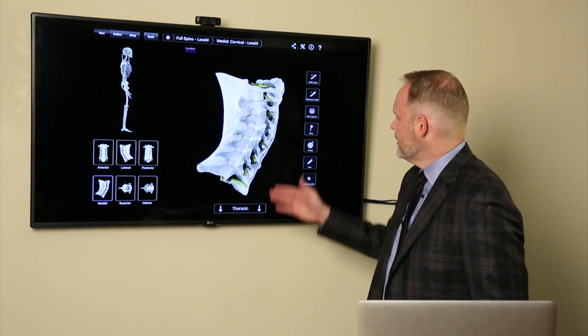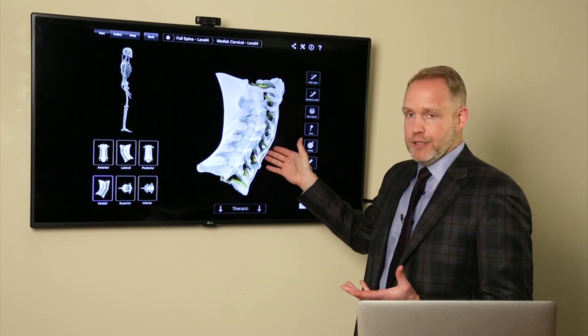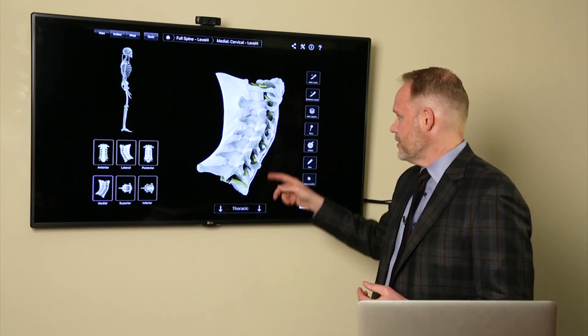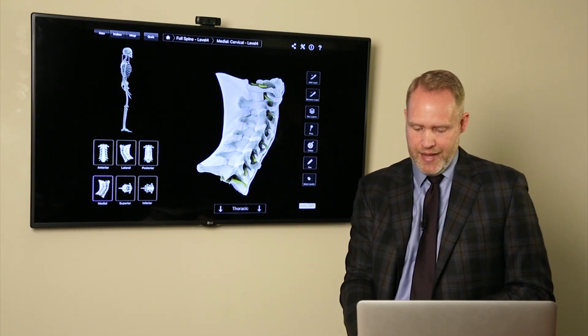After that, we then have some connective tissue. They're called ligaments, connecting bone to bone. So you can see the ligaments across the facet joints, the ligaments along the spinal processes in the back.